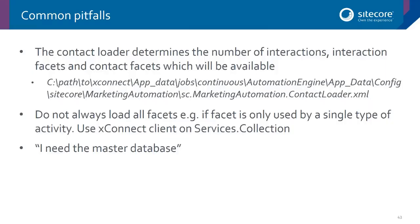A few common pitfalls: when the engine processes an enrollment, you get access to the contact, but we don't load all of the data for that contact because it could have severe performance implications. The contact loader determines what will be loaded — by default it loads certain interactions and specific contact facets, but you can change this by removing some or adding your own. A common question we get is: I created my custom activity but my custom facet data isn't available — this is why. Be mindful of that.